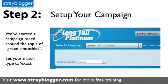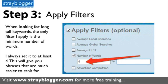So step two is to simply set up your campaign — you name your campaign. That's not necessarily the main keyword your campaign is based off of right there. Then you set your match type to exact — you always want to be looking at exact match search results.